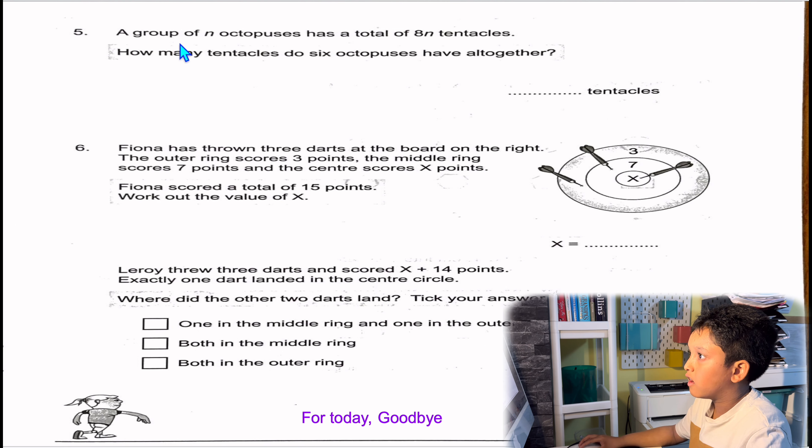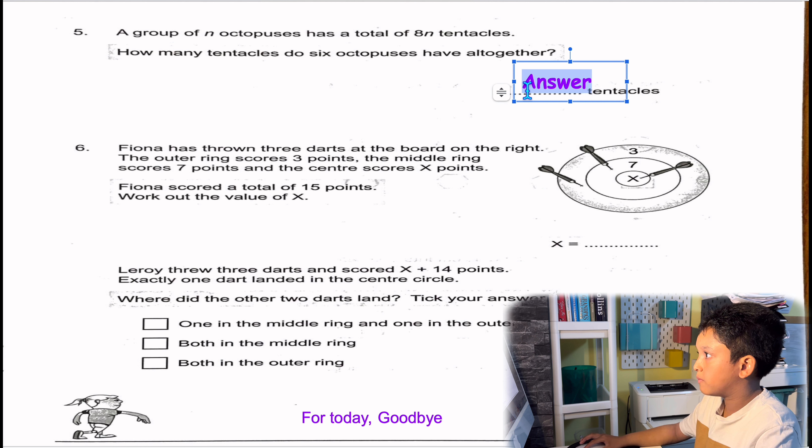Question 5: A group of N octopuses have a total of 8N tentacles. How many tentacles do 6 octopuses have altogether? Well, we need to use this formula, 8N. Just substitute N for 6. Because when a letter is next to a number with no space, then you'll have to times it. 6 times 8 will be 48. So 6 octopuses have 48 tentacles.